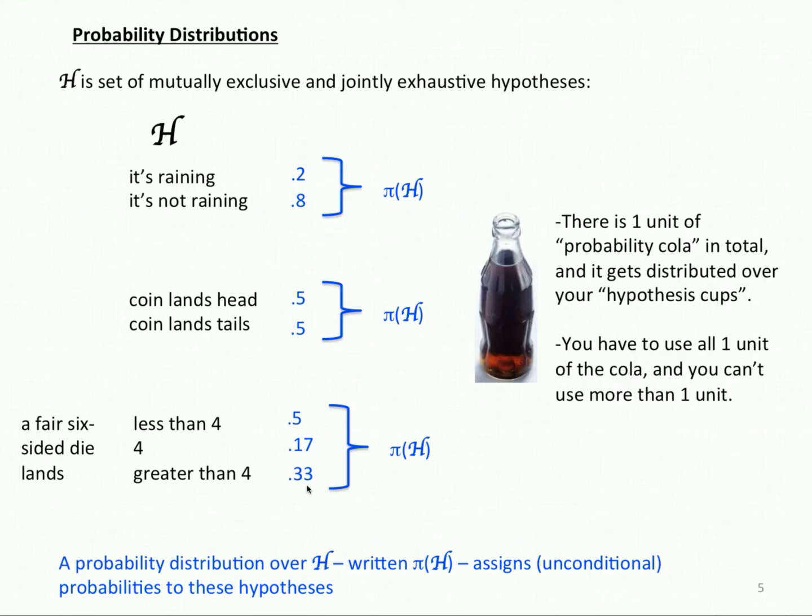You'll notice that there are constraints to the assignment of probabilities. Intuitively, the way this works, you can think of it as if there's one unit of probability cola in total and it gets distributed over your hypothesis cups. You have to use one unit of the cola, all of the one unit of the cola, and you can't use more than one unit. You'll notice that these constraints are obeyed for the probability assignments shown here.